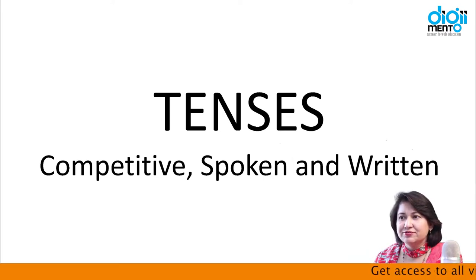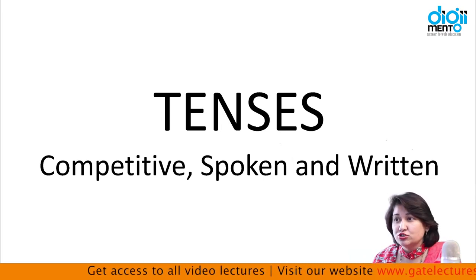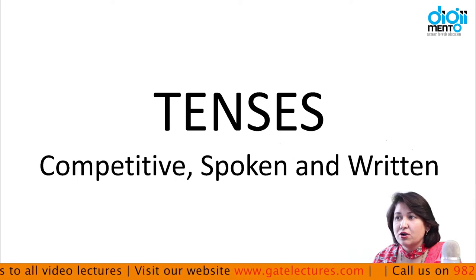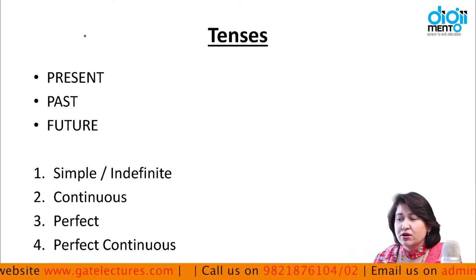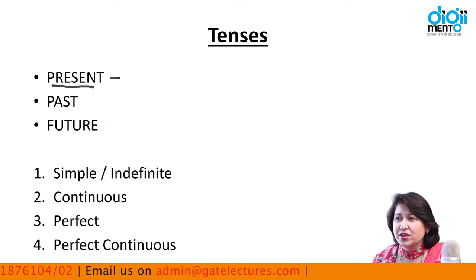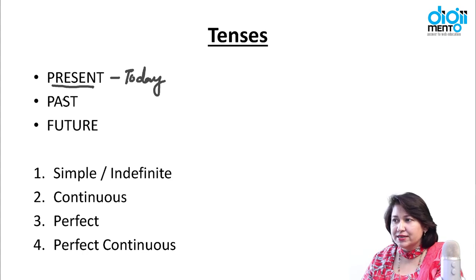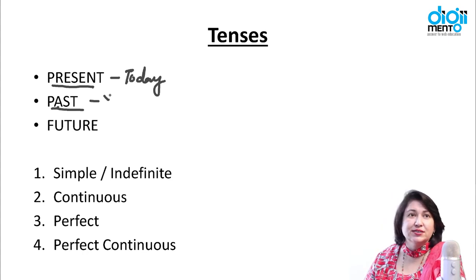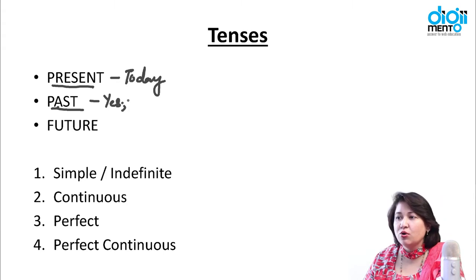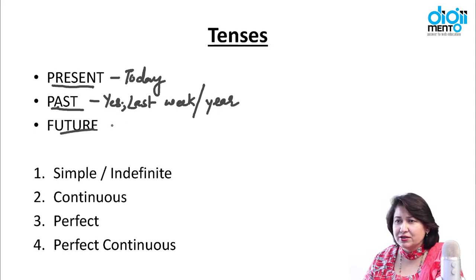If we talk about tenses, the first is present tense — present tense means today, whatever we are doing at this moment. Past can be like yesterday, last year, last week, or 10 years back — anything like that is your past tense. Future is something that will come — tomorrow, the next week, or the next year — something like that is in the future.